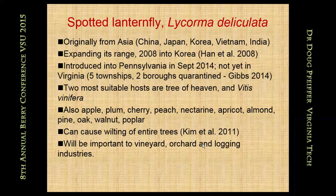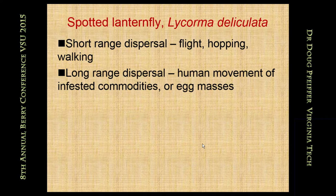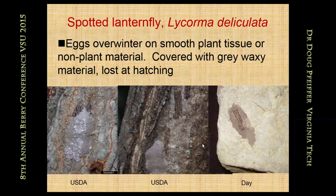The two favorite host plants are tree of heaven and grapevines, but it has a wide host range beyond those. I haven't seen data on most small fruits, but looking at the range of families, there's a high chance it will attack berry crops as well. It's a phloem feeder and can occur in very high numbers — the literature says they can cause wilting of entire trees. Short-range dispersal is by flight, hopping, and walking. Long-range dispersal comes from human movement of infested commodities or egg masses. They lay their eggs on any smooth object — smooth plant tissue or things like stone or rocks. On the right, you see an egg mass laid on a stone in Pennsylvania; the eggs are covered with gray, waxy material that eventually falls away at hatching.